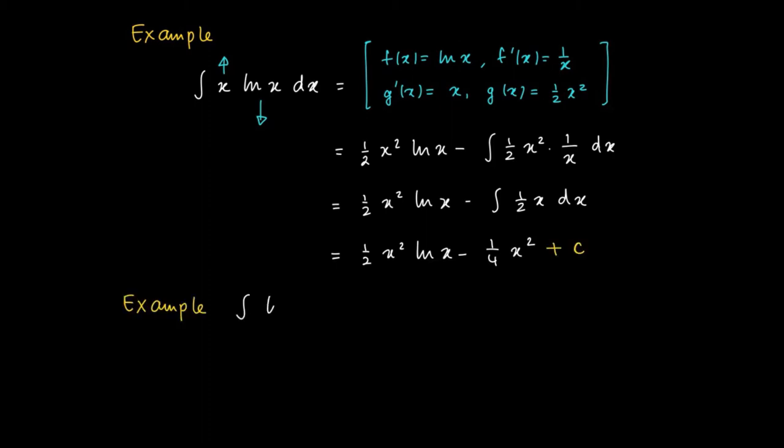So another example, we try to find a primitive of the function ln x. Well, you would say, if we use partial integration, there's no product. Well, we can make it a product by writing ln x as 1 times ln x. And we're going to integrate the term 1, and differentiate the ln x.